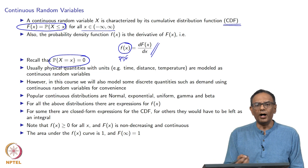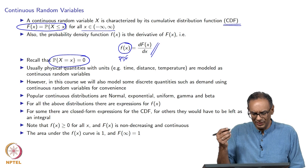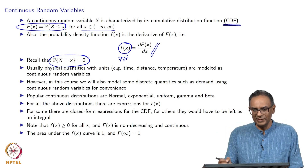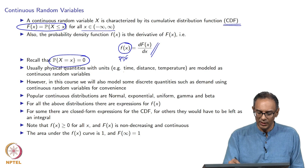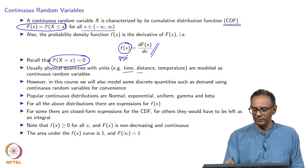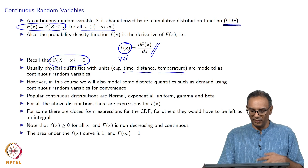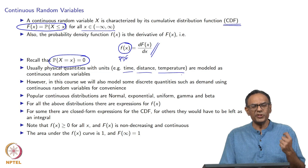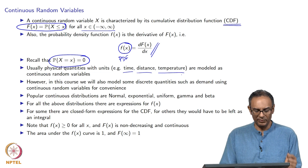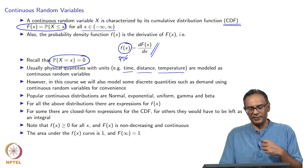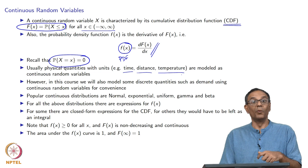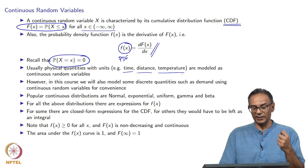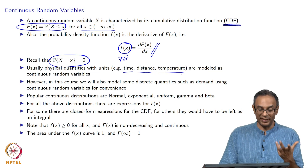We will see continuous random variables a lot in this course. The reason is that most physical quantities like time, distance, and temperature — essentially anything with a unit — are usually modeled as continuous random variables. Discrete random variables are usually things that are counted, like the number of people waiting in a queue or the number of vehicles produced in a factory.